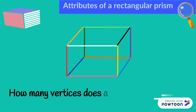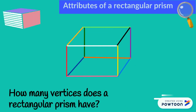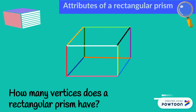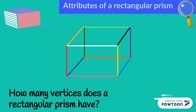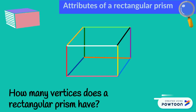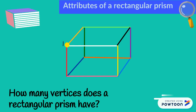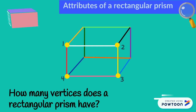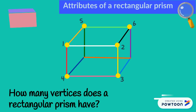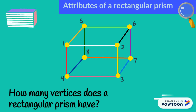The rectangular prism has twelve edges. What about the number of vertices? Let's count together. One, two, three, four, five, six, seven, eight. It has eight vertices.